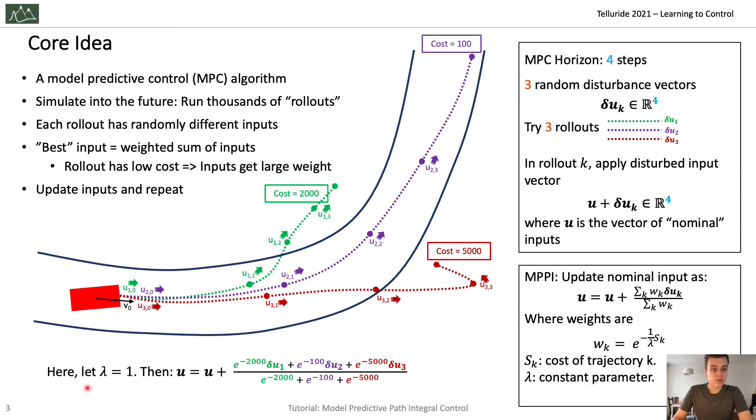Let's look at this example. When we choose lambda equal to 1, so it just all cancels out, then very simply, U would be updated as U plus e to the minus 2,000 corresponding to this cost times delta U_1 corresponding to the perturbations that resulted in this trajectory. Plus the same for the second and third trajectories. And then you divide it by the sum of the weights so the weights sum up to 1.